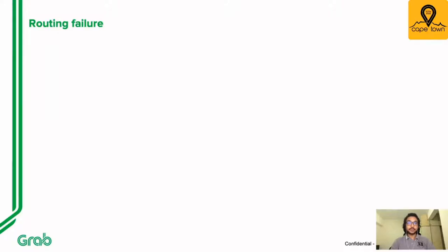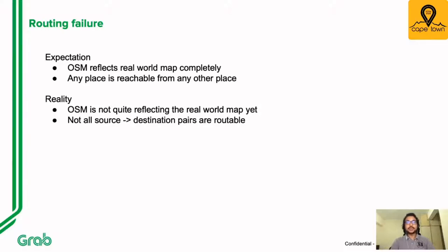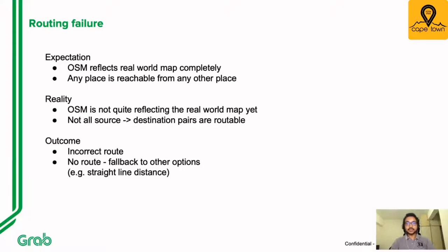Routing failure in OSM is one of those problems we see at times. Ideally, we expect OSM to completely reflect the real-world map, and we should be able to find a route between any two places. Each place should be reachable from any other place on the map. But unfortunately that's not always true — OSM is not quite reflecting the real world yet. This sometimes results in incorrect routes or even no route at all, meaning there is no way to get from place A to place B. This can cause fallback to other options; for example, if we want estimated travel time, straight-line distance might be used in case of a routing failure.